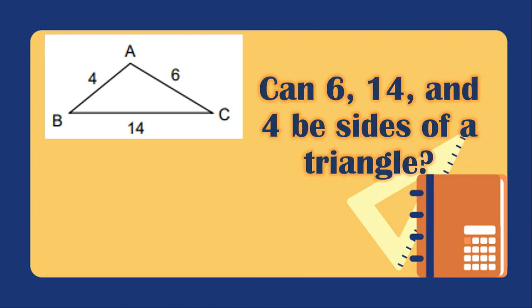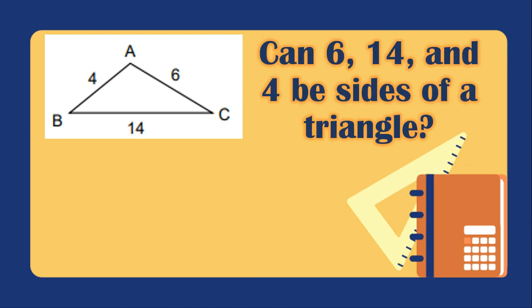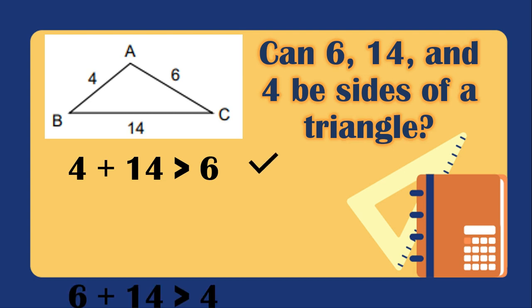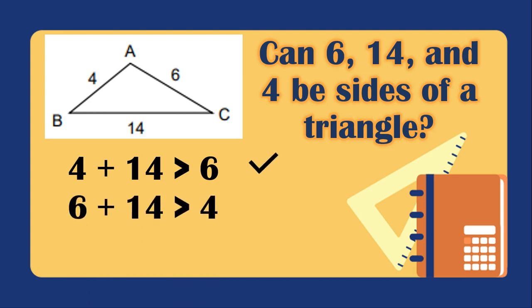Using this figure, can 6, 14, and 4 be sides of a triangle? We check all combinations: 4 plus 14 is greater than 6 — correct; 6 plus 14 is greater than 4 — correct; but 6 plus 4 equals 10, which is not greater than 14 — incorrect. Since not all combinations satisfy the inequality, these three lengths cannot be sides of a triangle.